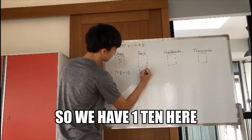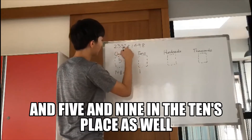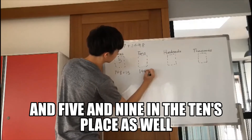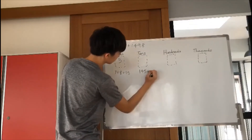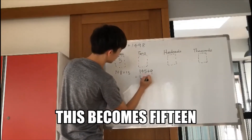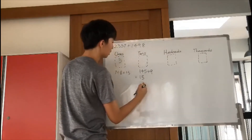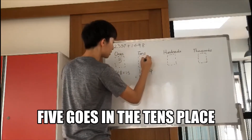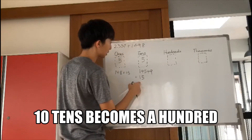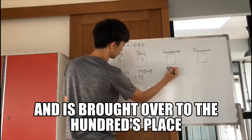In the tens place, we have one ten carried over, and five and nine in the tens place as well. This becomes fifteen. Five goes in the tens place, ten tens becomes a hundred, and it's brought over to the hundreds place.